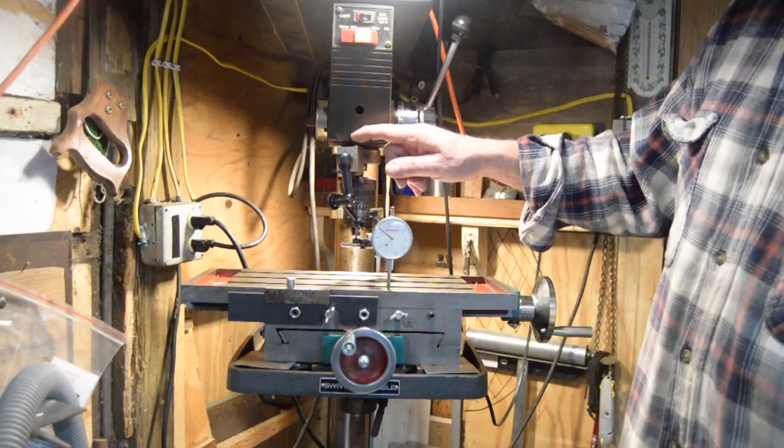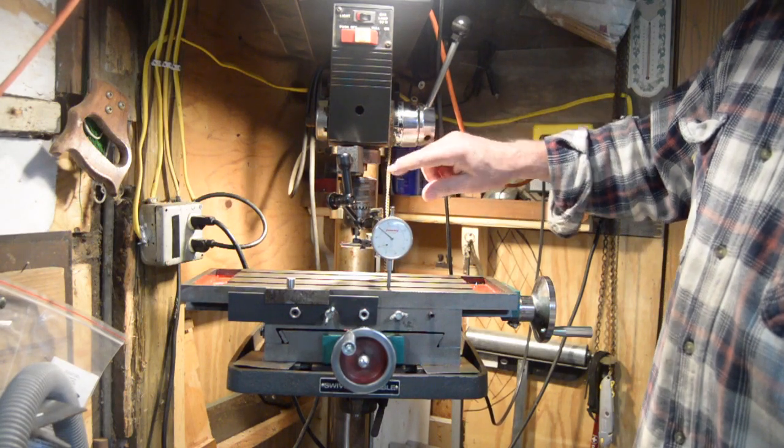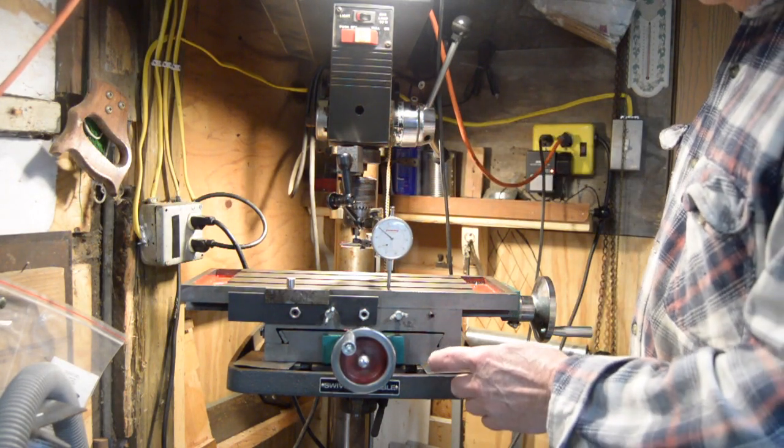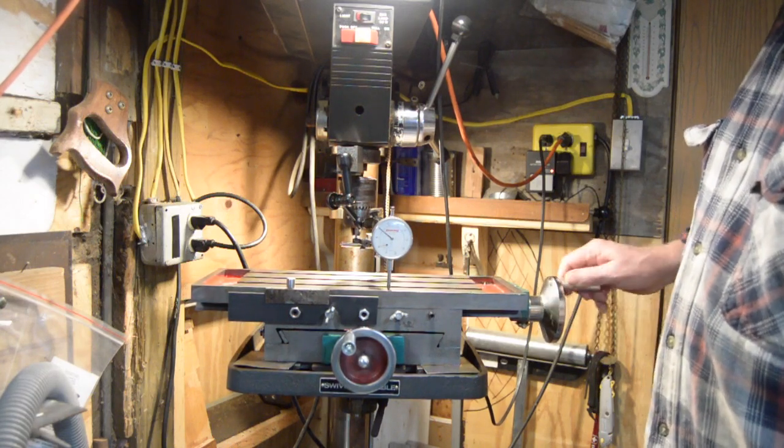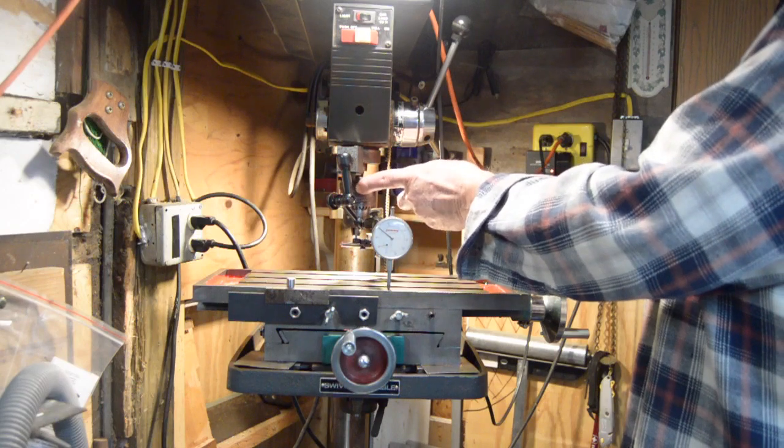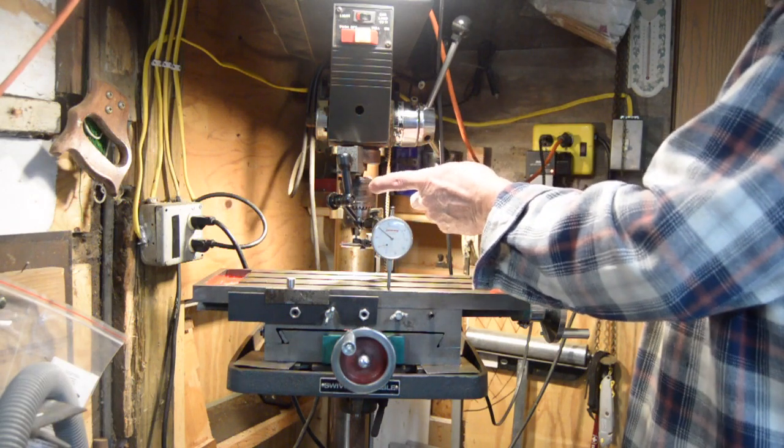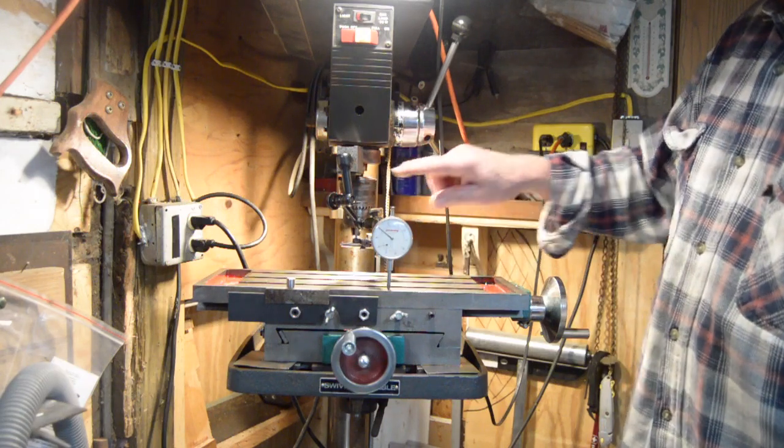When you put your indicator on a stationary object like I have here and crank the table, you're not actually measuring whether this is perpendicular to that stem. You have to get that stem, the spindle, you have to get this perpendicular to the spindle.